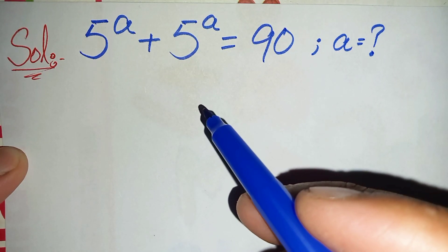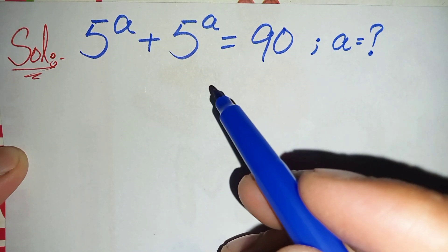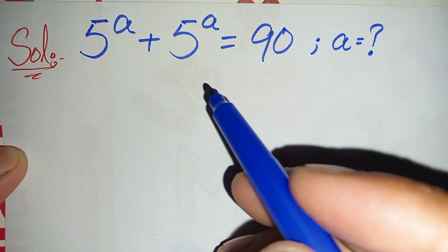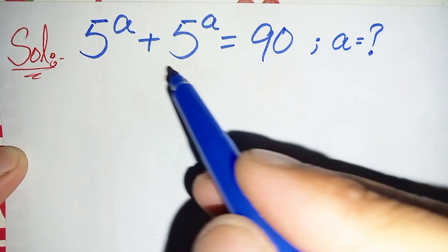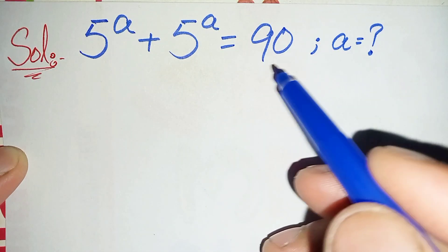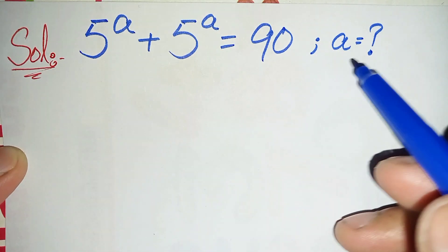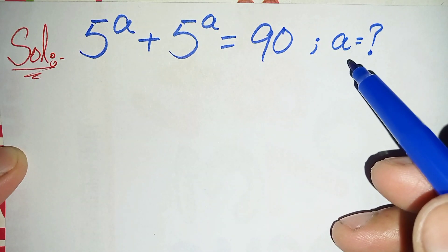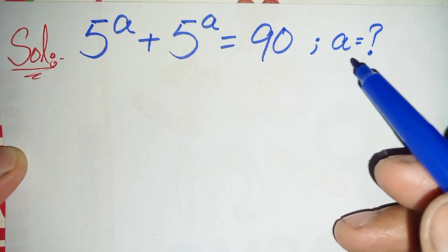Hello, you are welcome. How to solve this nice exponential equation: 5 raised to power a plus 5 raised to power a is equal to 90. Here we will try to find the value of the unknown a.